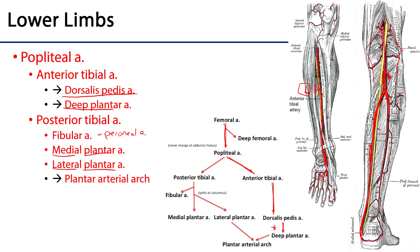So let's follow that pathway: femoral → popliteal → posterior tibial → and then at the calcaneus, medial and lateral plantar arteries. The medial plantar artery runs along the medial side of the plantar surface of the foot, whereas the lateral plantar artery runs along the lateral side of the plantar surface of the foot. This lateral plantar artery and the deep plantar artery coming from the anterior tibial come together in an anastomosis called the plantar arterial arch, to fully serve the plantar surface of the foot. So we have ultimately a connection between downstream branches of anterior and posterior tibial arteries serving the foot. That is the 10,000-foot view of the arteries of the lower limb, all derived from the external iliac artery.